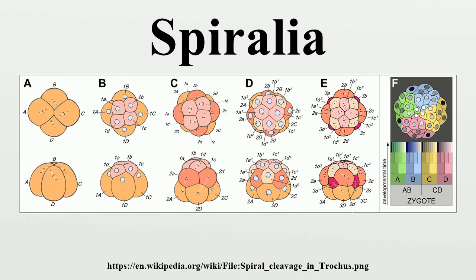Evidence of the relationship between mollusks, annelids and lophophorates was found in 1995. More recent research has firmly established the Lophotrochozoa as a superphylum within the metazoa. With this new understanding of animal phylogeny, the presence of spiral cleavage in polyclad platyhelminths is better contextualized. As a consequence, Spiralia is occasionally used as a synonym for Lophotrochozoa, although the veracity of this statement is not established.